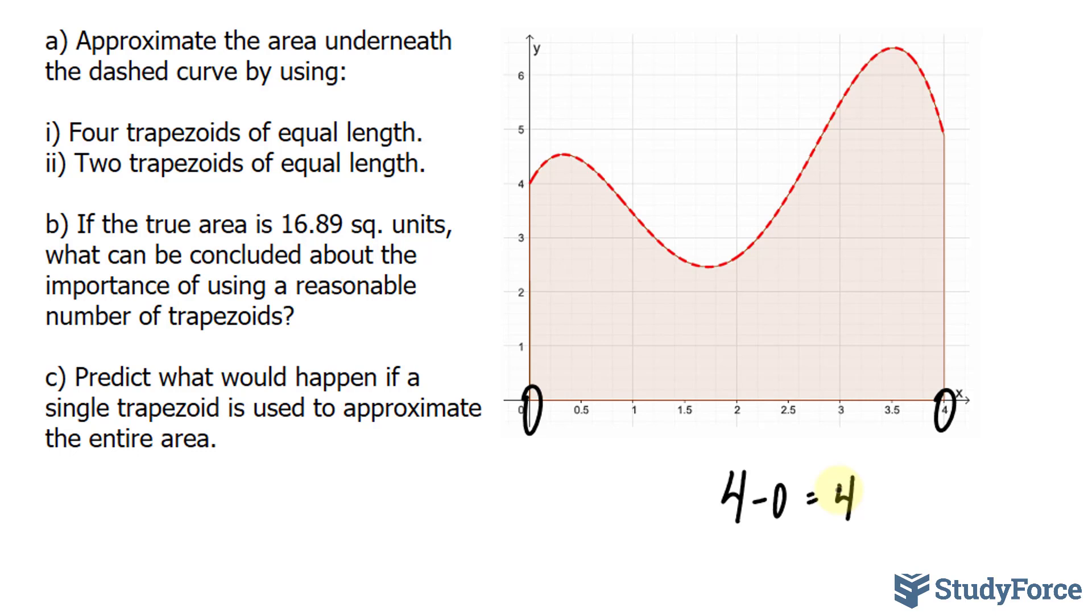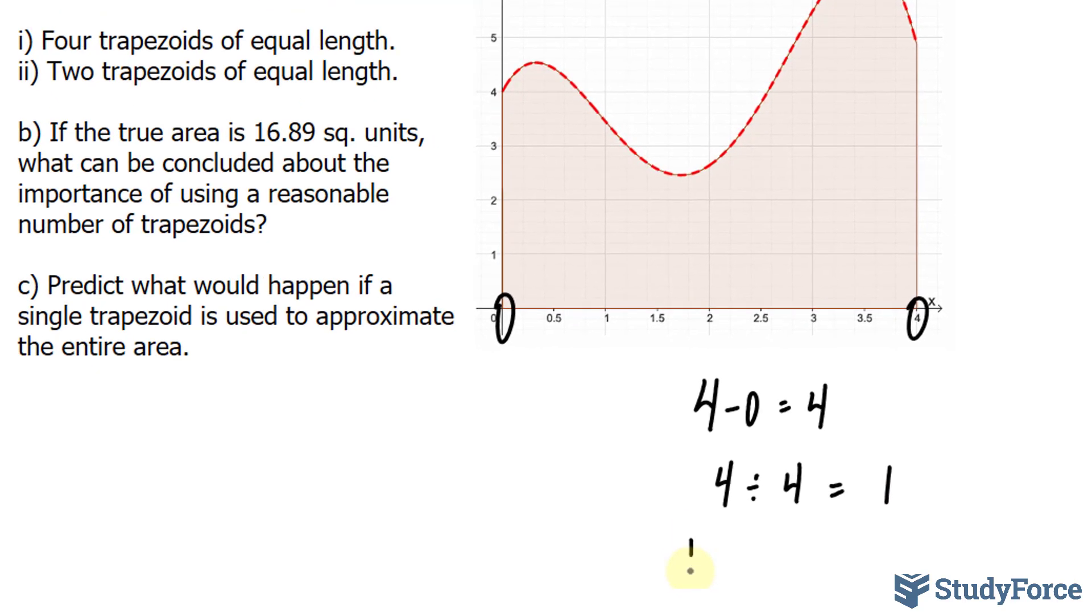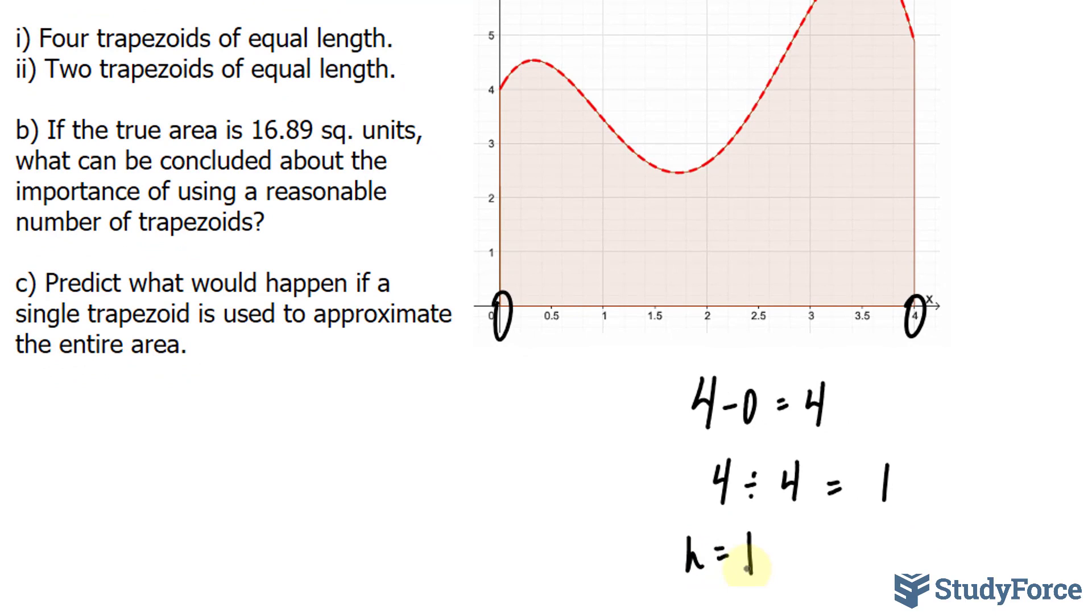Now, it's quite obvious that it's 4. We don't need to show 4 minus 0, but depending on your question, it might not start at 0, and so you would need to do this step to find the width. Now, because they want 4 trapezoids, we will take this value of 4 and divide it by the amount of trapezoids we want to use to approximate the area underneath the curve. So, we'll take 4 and divide it by 4, and this gives us 1. That number tells us the h value of each of the trapezoids that we'll be using, or the width of each trapezoid. So, I'll call this h equals 1.